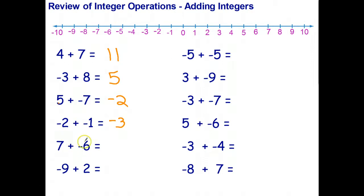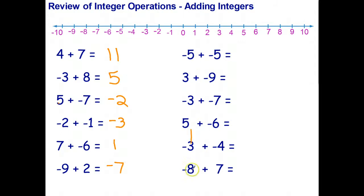I'll just do these last two. I've got seven dollars in one pocket and a bill for one dollar — I can pay off my bill and still have one dollar left. The last one: I've got a bill for nine dollars and two dollars — I can pay off part of the bill but still owe seven dollars. Go ahead and stop the video and try the questions on the right.